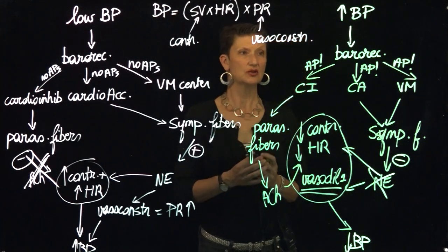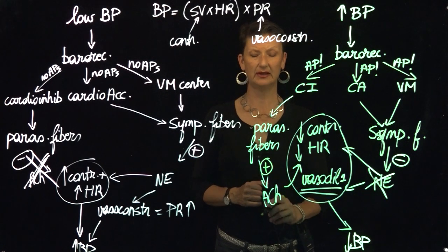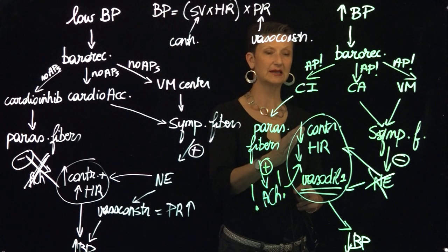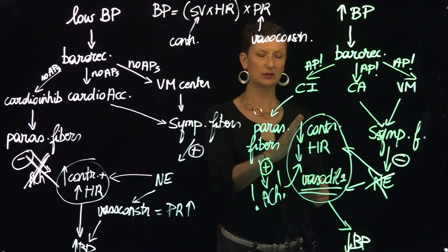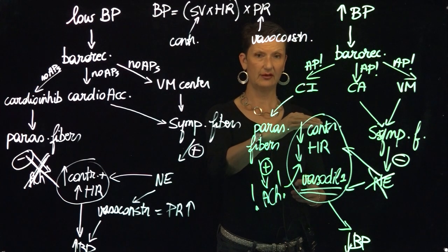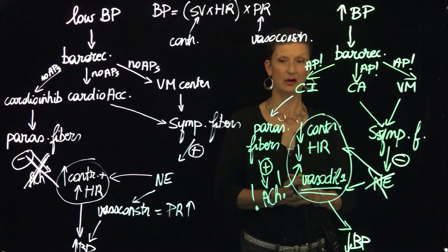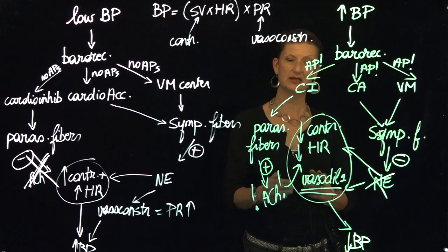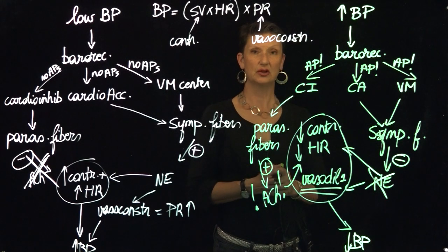The cardioinhibitory center will activate those parasympathetic fibers to release acetylcholine, because acetylcholine will act inhibitory on the heart. So by secreting acetylcholine onto the heart, the heart is going to have a lower contractility level, a lower heart rate, and therefore we bring down our blood pressure. We actually have stimulated our parasympathetic fibers because then we literally hyperpolarize the heart for it to, for instance, slow down its heart rate.